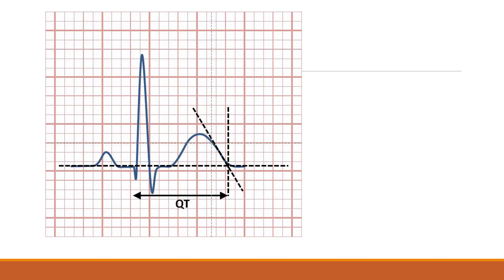This is the ECG showing QTc prolongation. The normal QTc interval is less than 440 milliseconds. On the ECG, one big box represents 0.2 seconds.